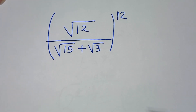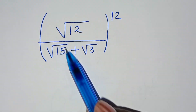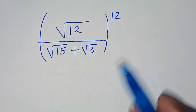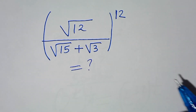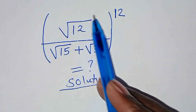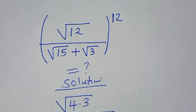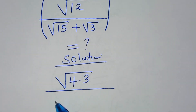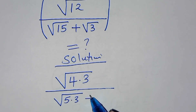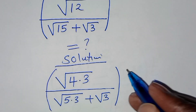Welcome to solve this math olympiad problem: the square root of 12 divided by square root of 15 plus square root of 3, everything raised to power 12. We can express square root of 12 as square root of 4 multiplied by 3, divided by square root of 15 expressed as square root of 5 times 3, then plus square root of 3, everything raised to power 12.